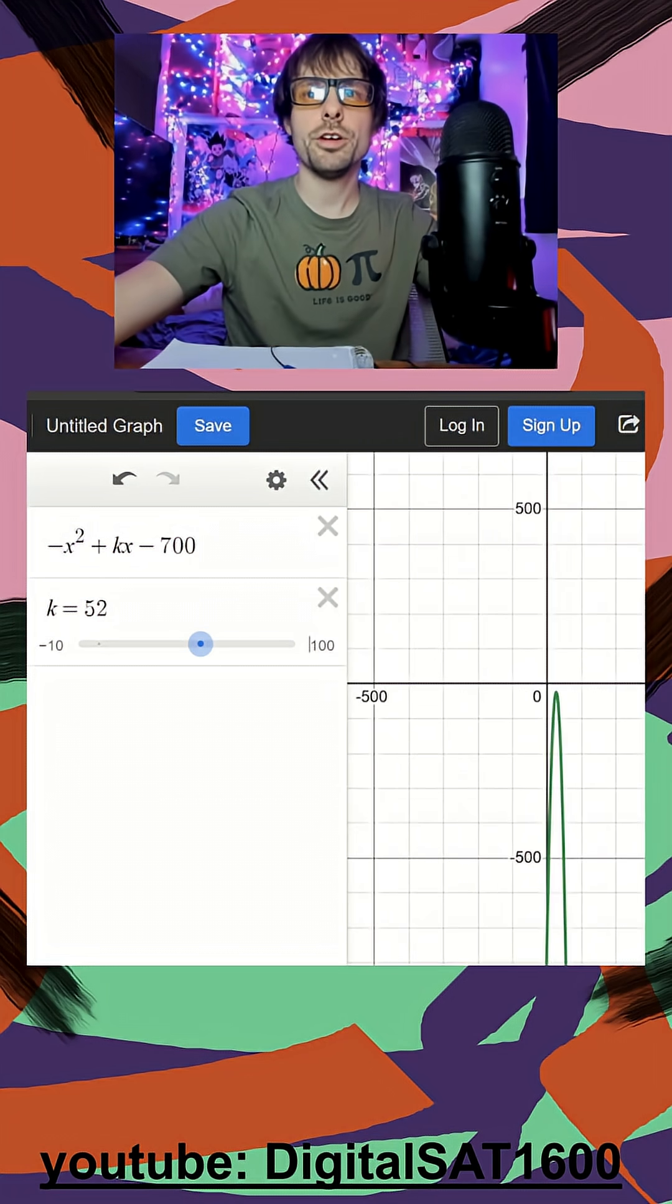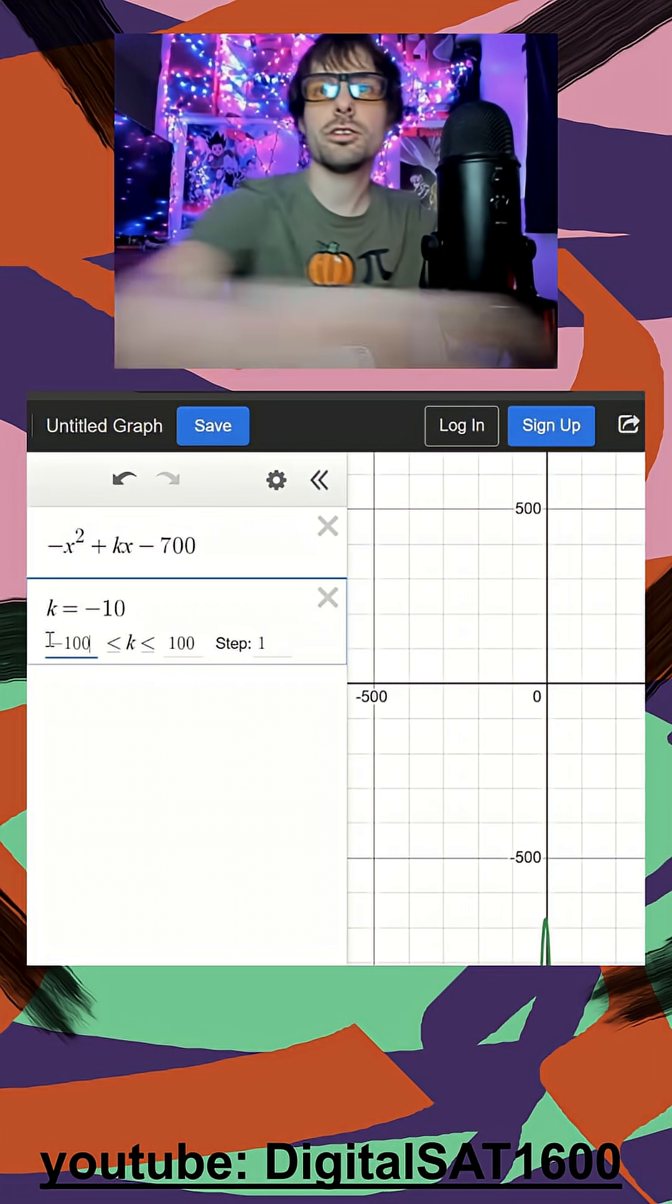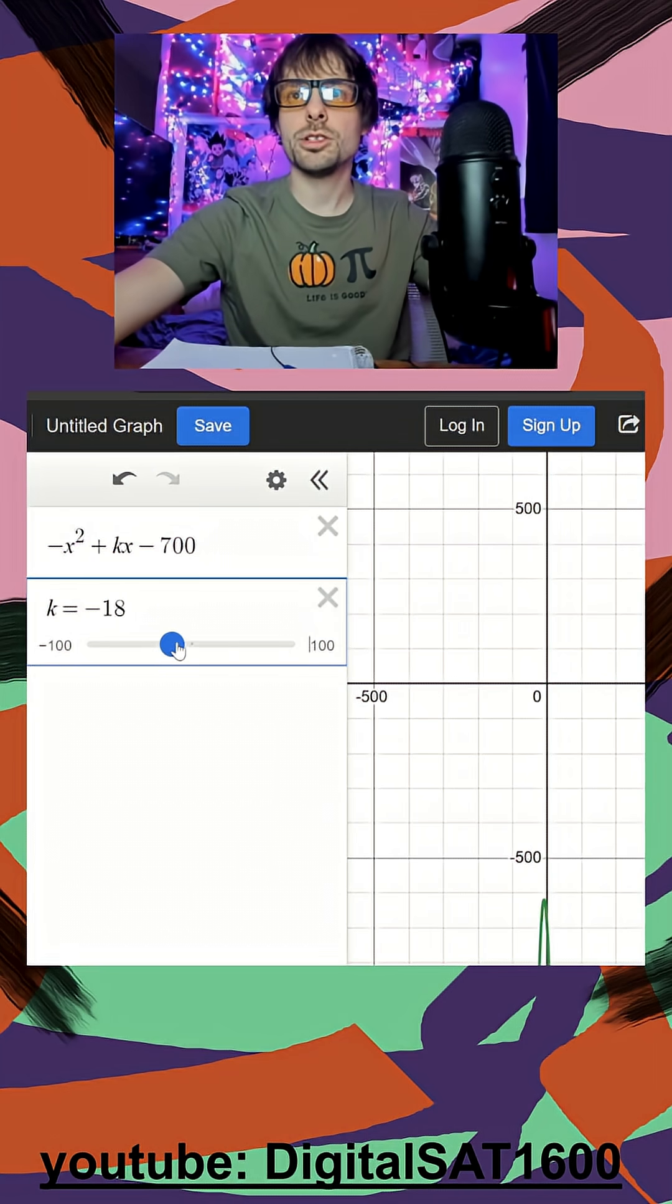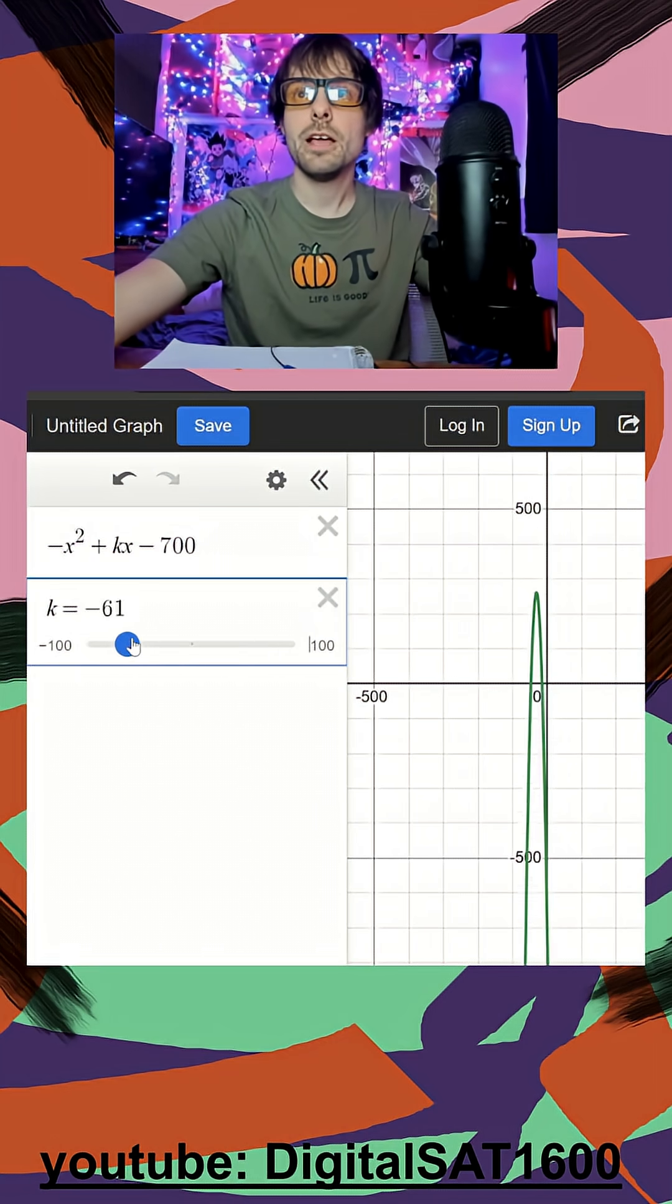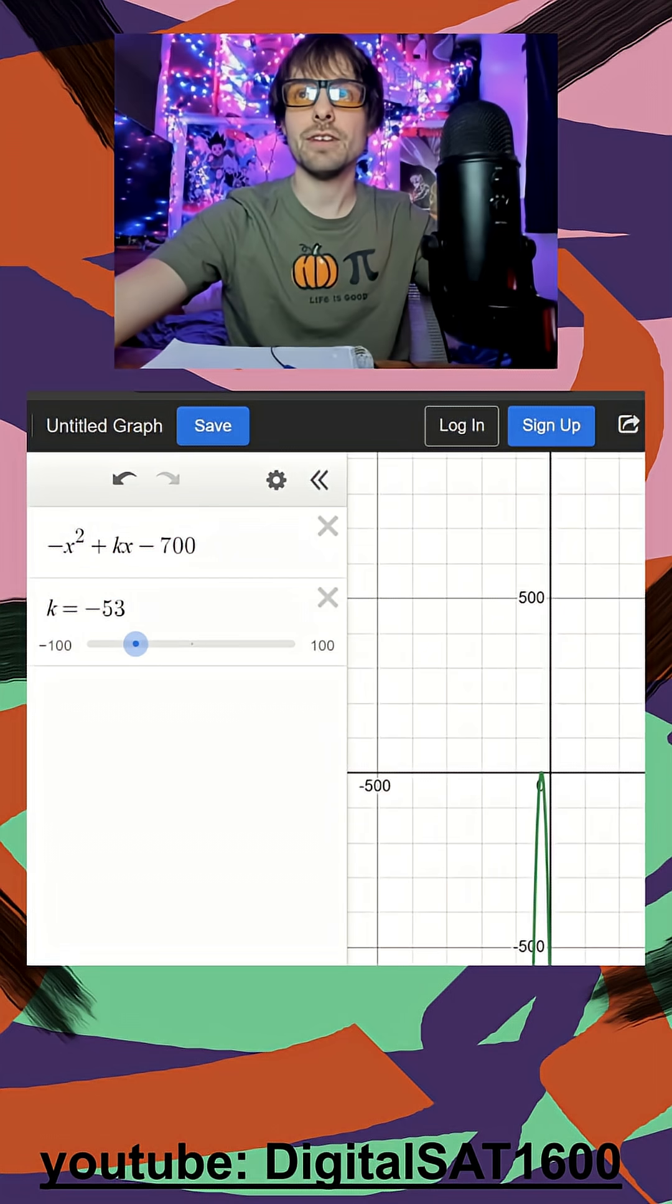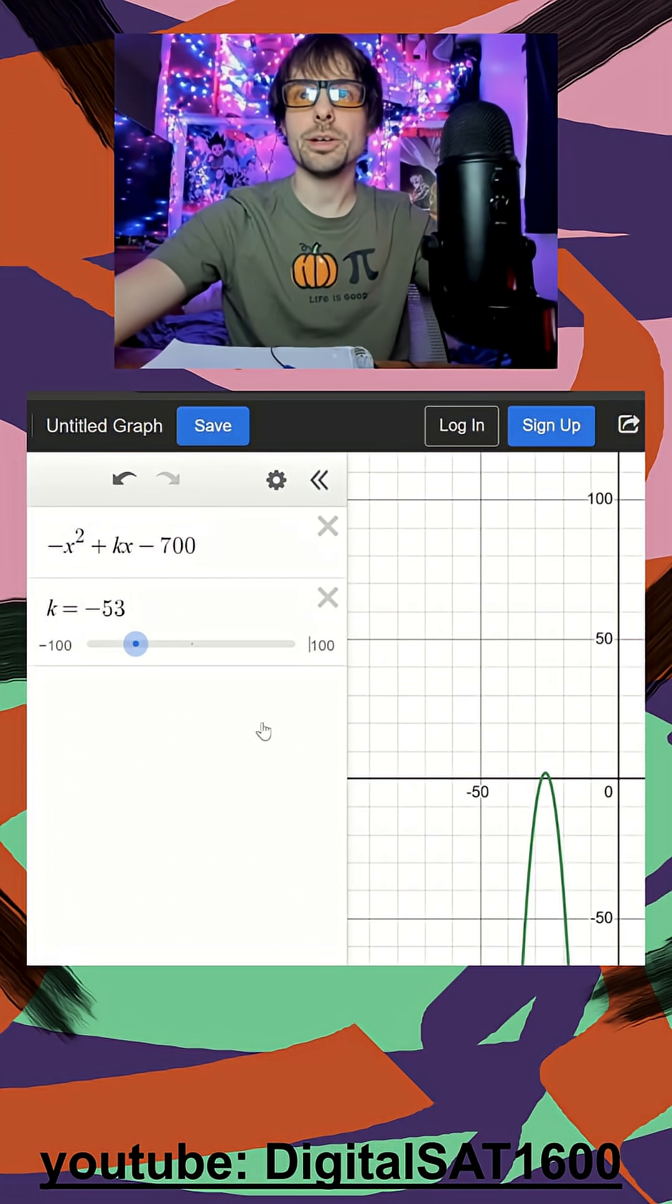But I always want to double check. I wonder if negative does anything as well. So I'll make this negative 100 and I'll see if I can also get close to it. And this is a weird one where it does go both ways positive and negative. The smallest negative I can do is going to be pretty similarly, it's going to be negative 52.